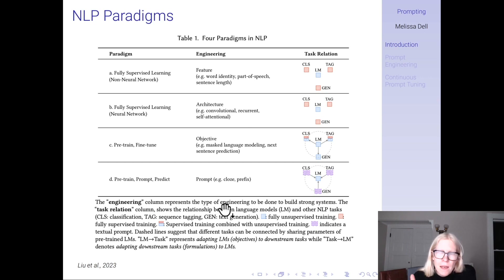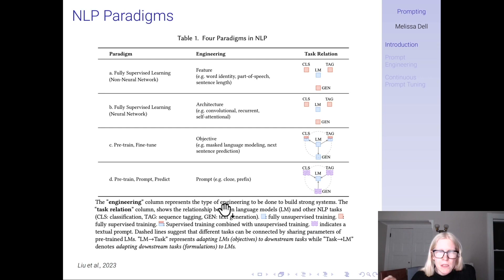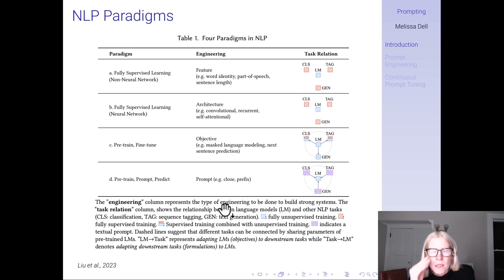Then there's the fourth paradigm: pre-train, prompt, and predict, where you do not touch the parameters of the large language model. It is frozen, but you give it a prompt that has been appropriately designed to perform your downstream task.